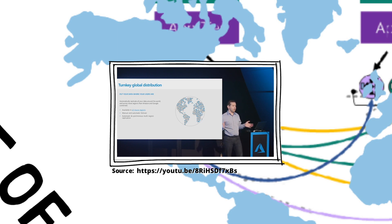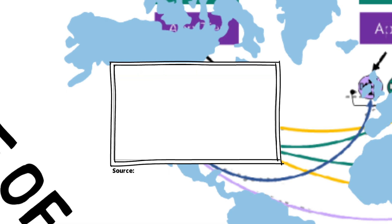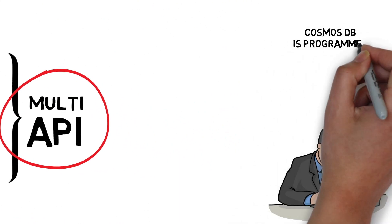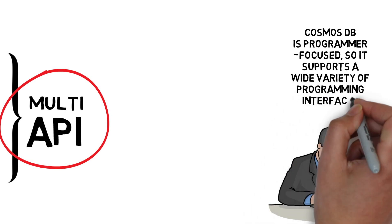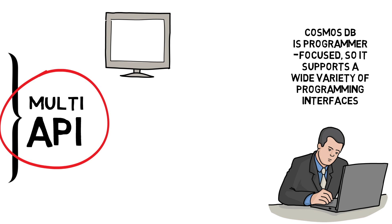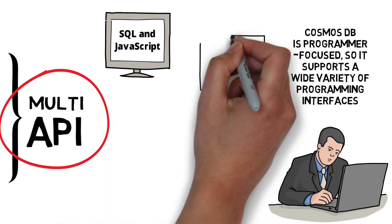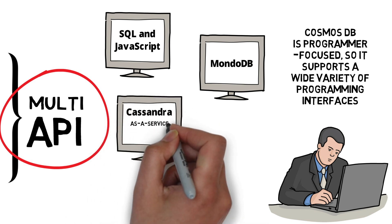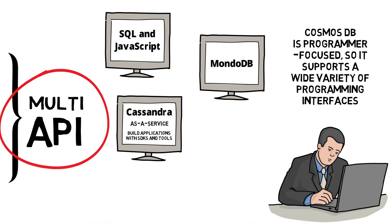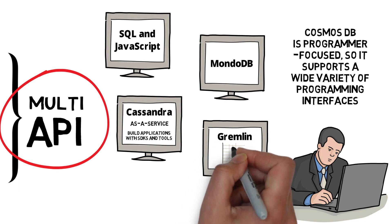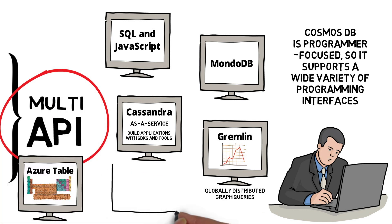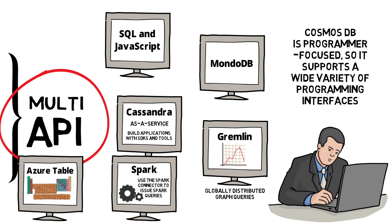All of your data can be made globally distributed or simply hosted in one particular region. Let's talk about the multiple APIs provided by Cosmos DB. Cosmos DB is a programmer-focused service supporting a wide variety of programming interfaces, including SQL and JavaScript APIs, native API support for MongoDB with no code changes, Apache Cassandra as a service, APIs for Gremlin and Graph queries, Azure Table Storage APIs, and Apache Spark with real-time machine learning using the Spark connector.